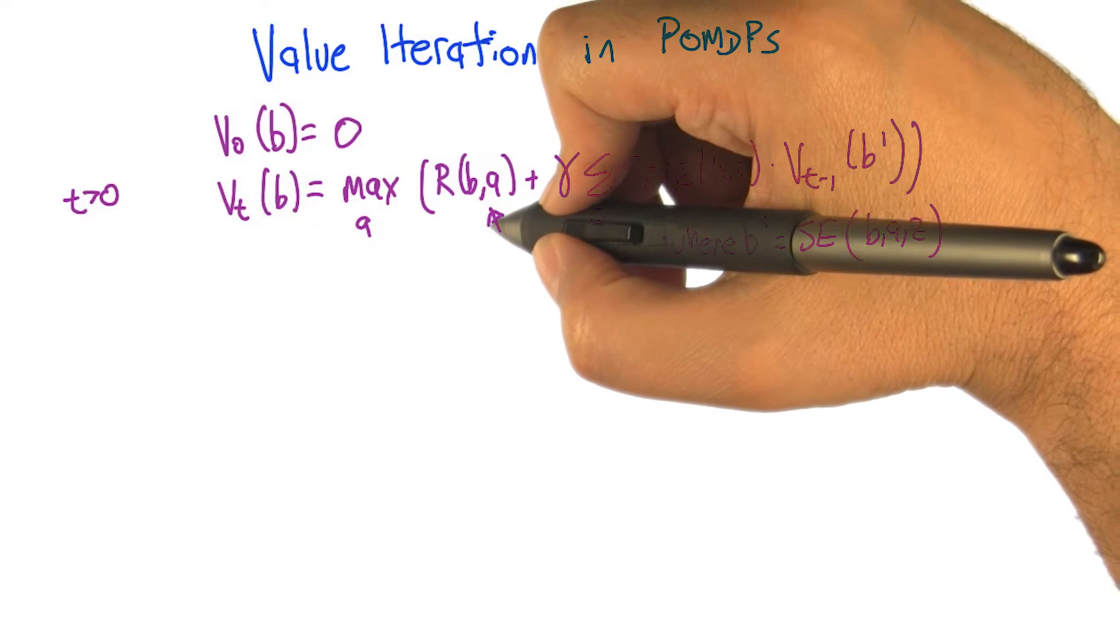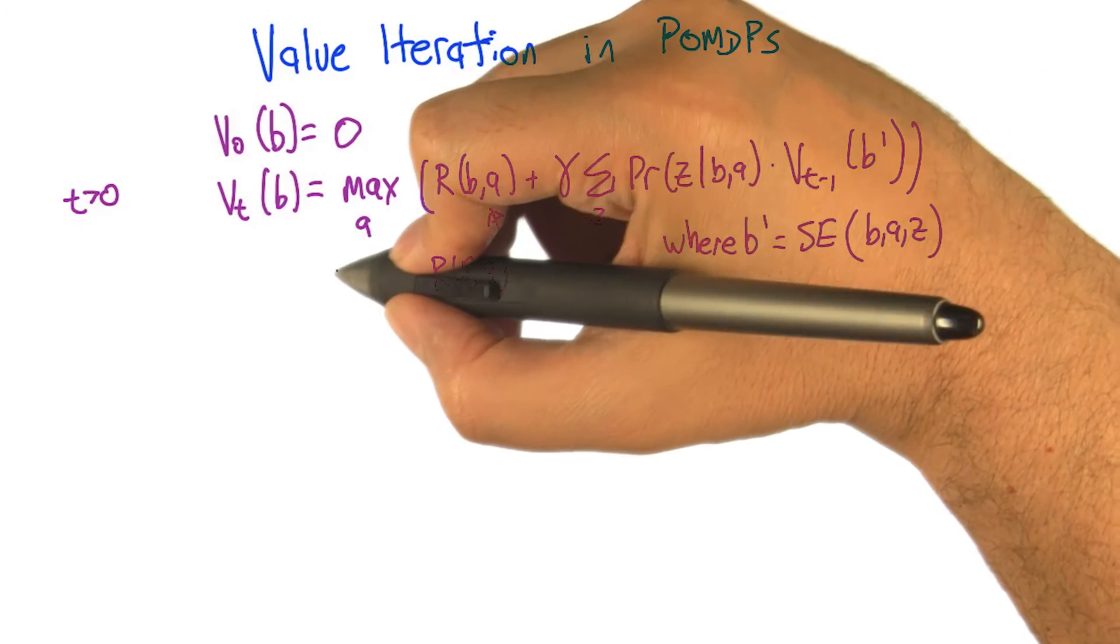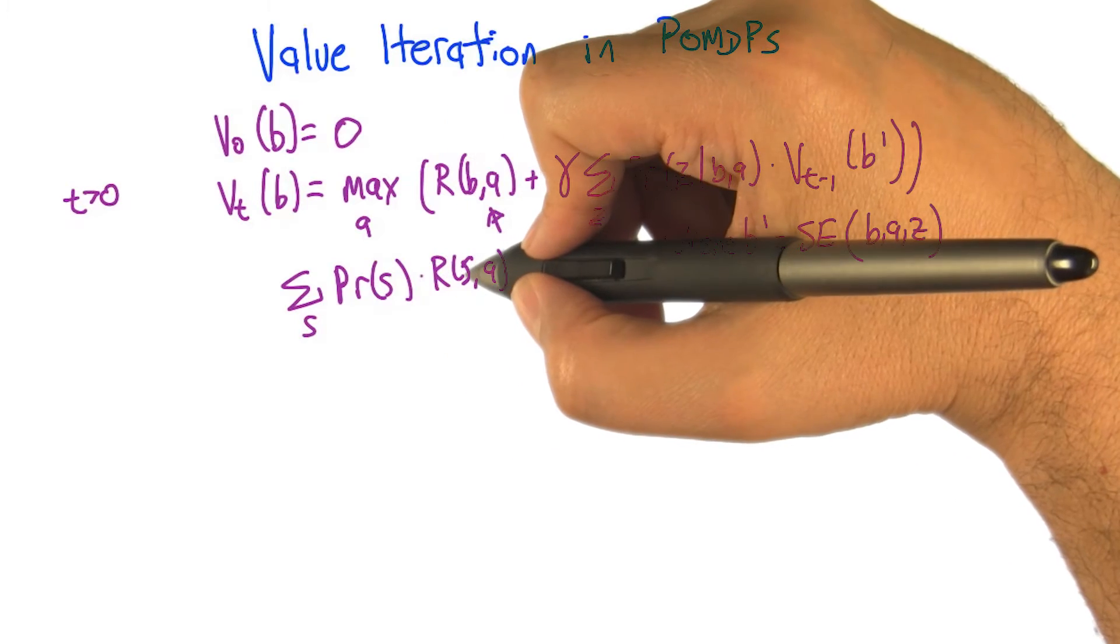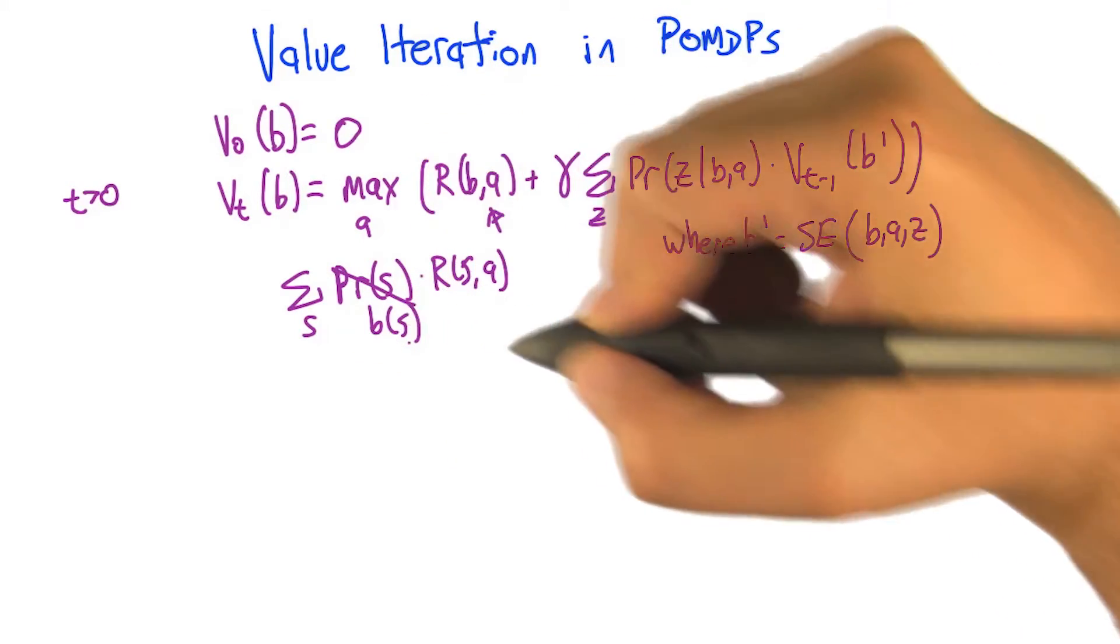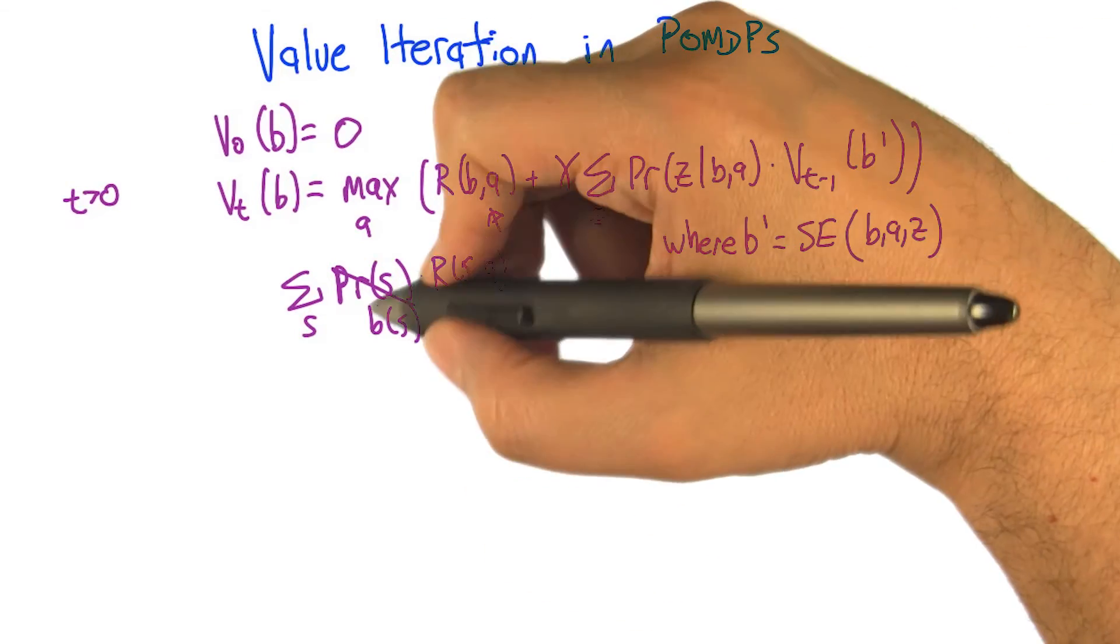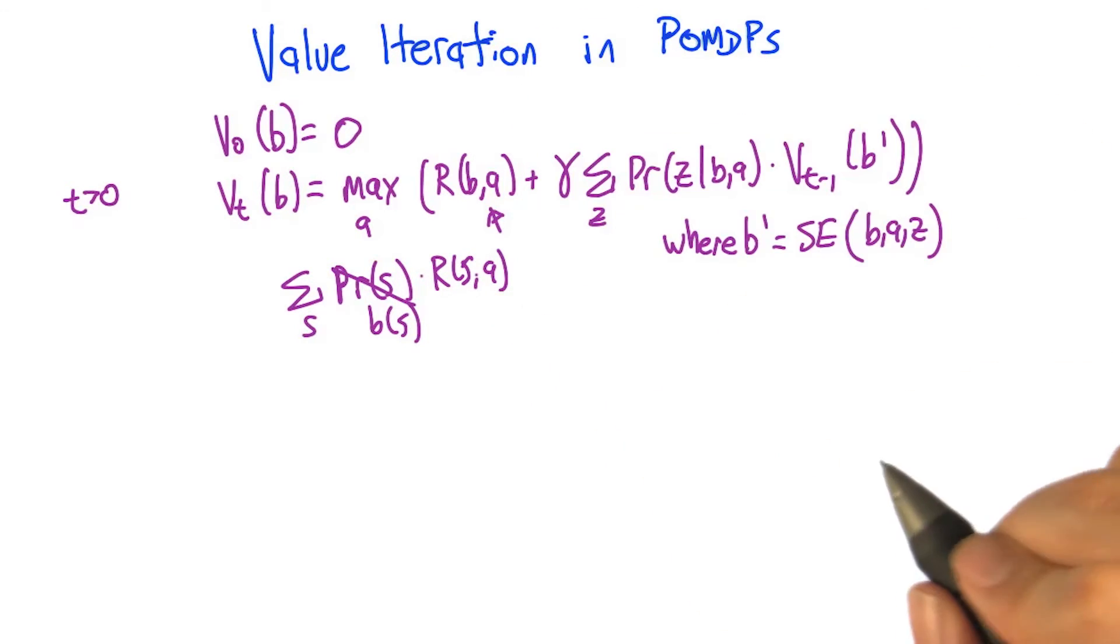Yeah, and in particular, all we have to do is say, well, we would get the reward for state s if we were in state s, so let's just sum over all states, the probability that we're actually in that state, the reward that we would get from that state. And of course, this is just the belief state for state s. So this is really just the dot product of the belief state with a vector that you could make out of the rewards for a given action. It really is just the average reward you would expect given the belief state. Exactly.